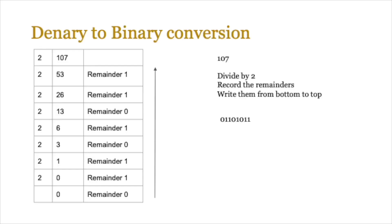Next is denary to binary conversion. Take the number 107 — divide by base 2 and take the remainder each time. 2 goes 53 times into 107 remainder 1, then 2 goes 26 times into 53 remainder 1, and so on, continuing until 1 divided by 2 gives remainder 1 with 0 left. Read the remainders bottom-up and that's your binary conversion, which should give you 107 in binary.